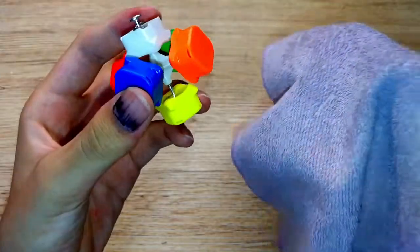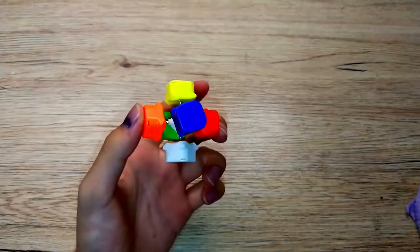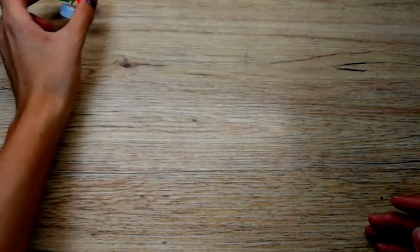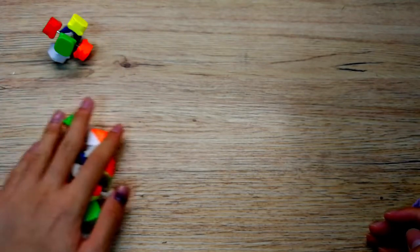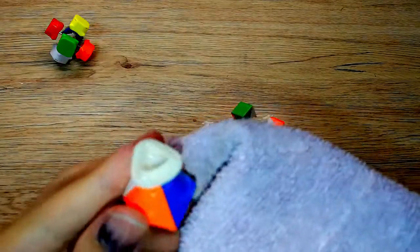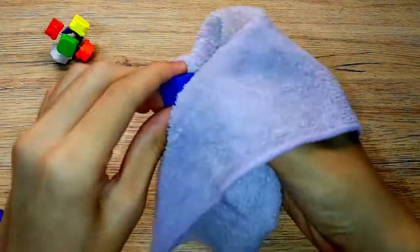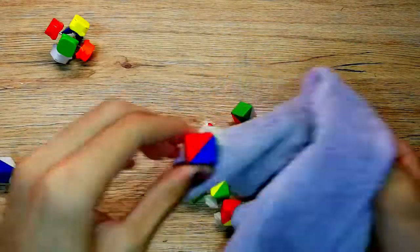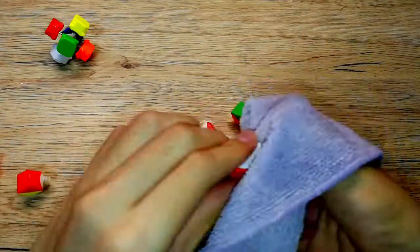Just take the cloth, wipe the insides and outsides. After cleaning the core it's pretty much done. Now it's time for the pieces. While I'm cleaning up the pieces, I'll tell you guys a short story.